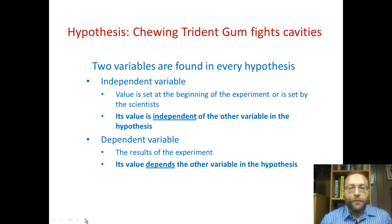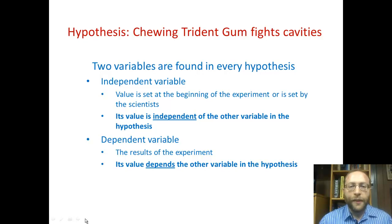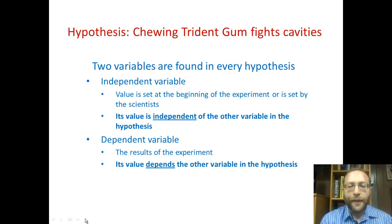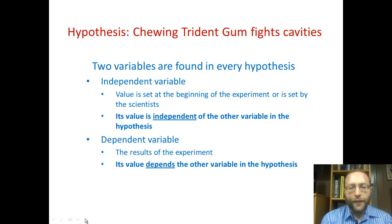So, first of all, there are two variables found in every single hypothesis. The first is the independent variable. Its value is set at the beginning of the experiment, or is set by the scientists. Its value is independent of the other variable in the hypothesis, which is why it's called the independent variable.